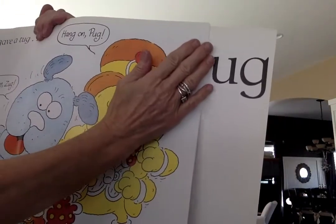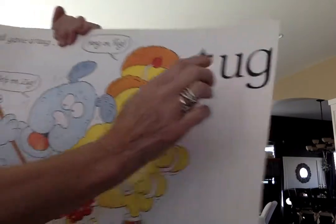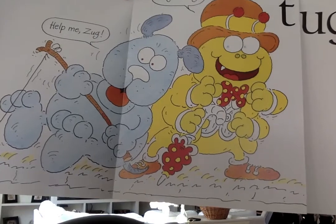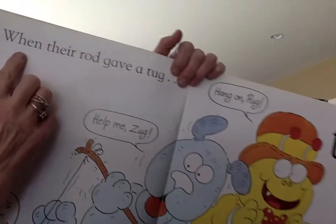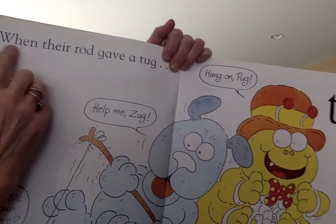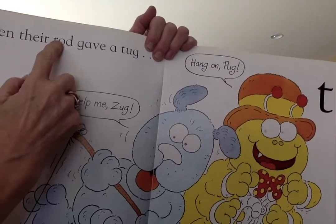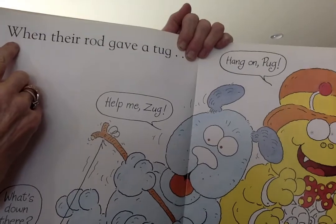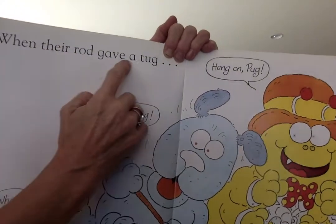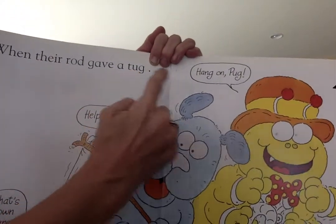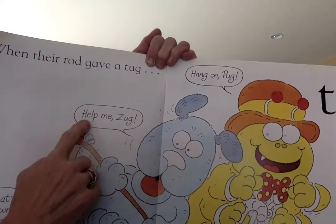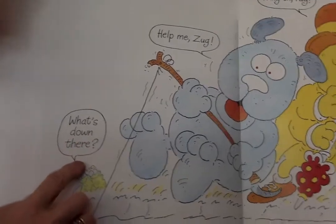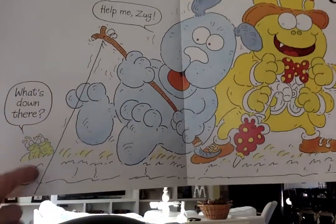If I know UGG, I know Tug. Check the picture out first. W-H — When. When their R-O-D — rod. I'm going to go back, I didn't know that word. When their rod gave a tug. Hang on, Pug. Help me, Zug. What's down there? What do you think is down there? A big fish?